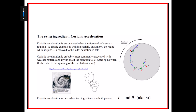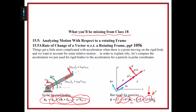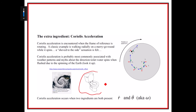That extra ingredient — this term right here — is what we refer to as the Coriolis acceleration. The best simple example is walking on a merry-go-round, a moving reference frame. A rotating reference frame is another phrase you should associate with Coriolis acceleration — a rotating reference frame will create Coriolis acceleration.